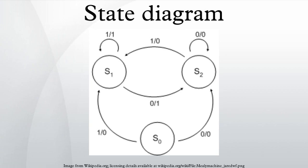Example: Mealy machine. S0, S1, and S2 are states. Each edge is labeled with j/k, where j is the input and k is the output.